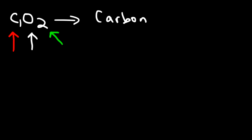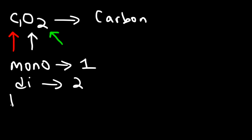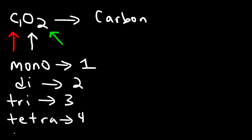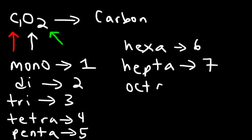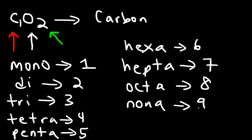Continuing the prefixes: penta = 5, hexa = 6, hepta = 7, octa = 8, nona = 9, deca = 10. You don't have to say monocarbon — if there's a one or no number for the first element you can disregard mono. But for the second element you do use mono if there's a one. Because of the two in CO₂, we use di, giving us carbon dioxide.